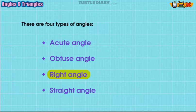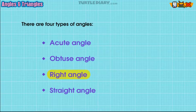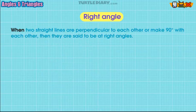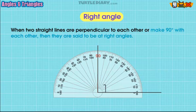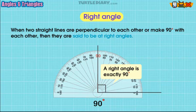Right angle: when two straight lines are perpendicular to each other or make 90 degrees with each other, then they are said to be at right angles. Right angles are often shown with a box in the corner that lets you know it is exactly 90 degrees.